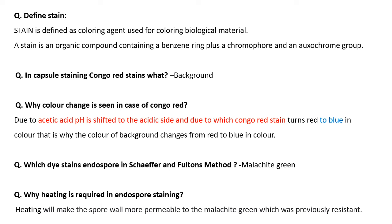Define stain. In a simple sentence, a stain is a coloring agent used for coloring the biological material or specimen. You can also define it as an organic compound containing a benzene ring plus a chromophore and an auxochrome group which stains the biological material. Up to here, it was about the basics of staining techniques.